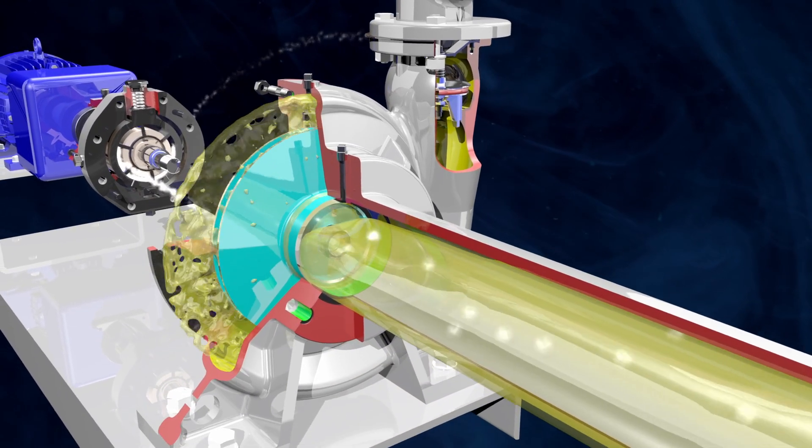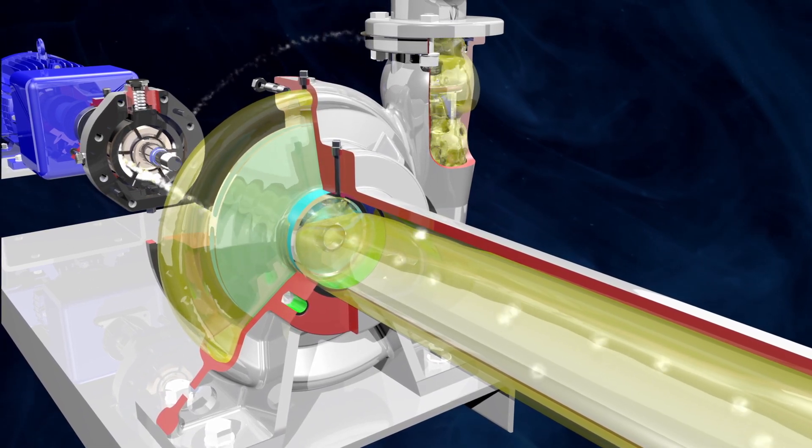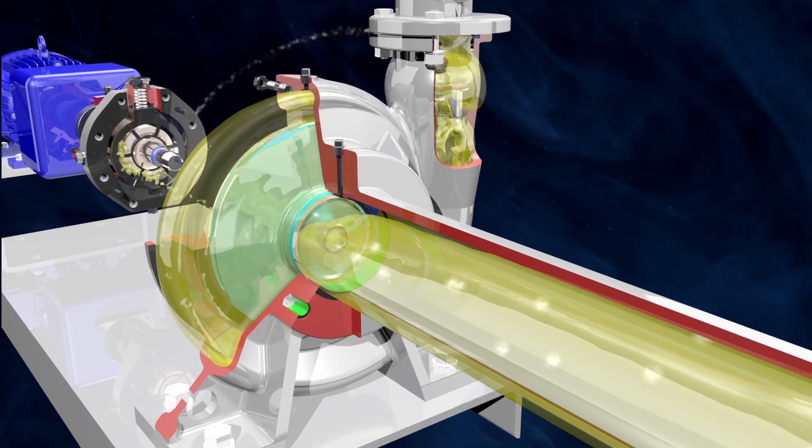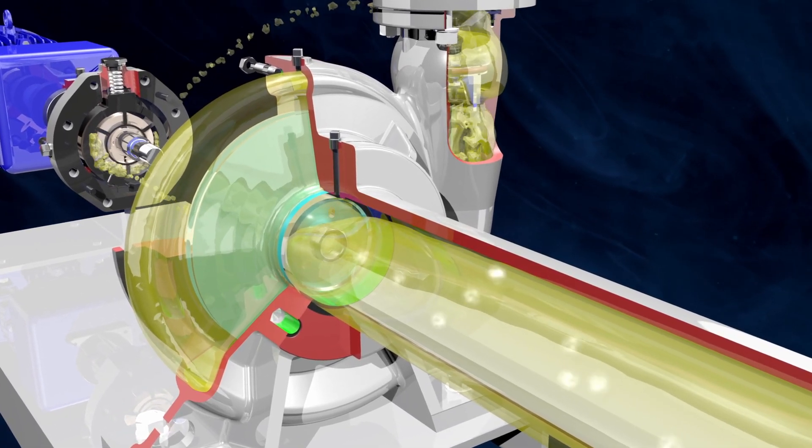As the centrifugal portion comes online and all air and vapor are expelled, the impeller creates liquid flow, shifting the priming pump into neutral, where it continues to operate with minimal liquid flow.